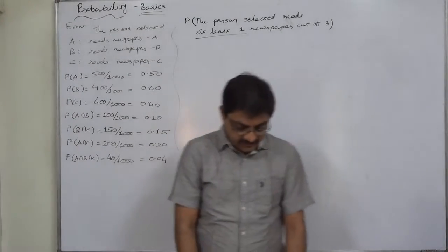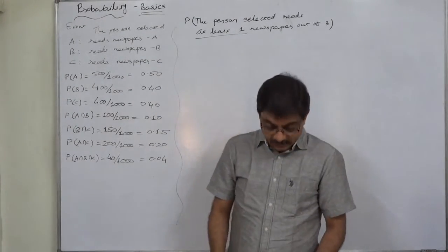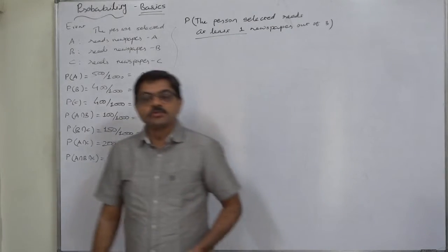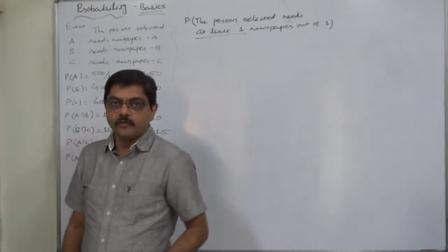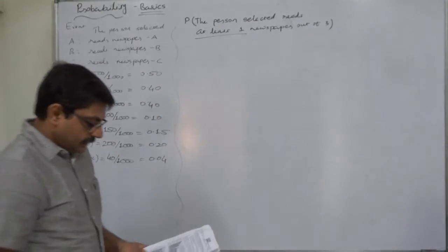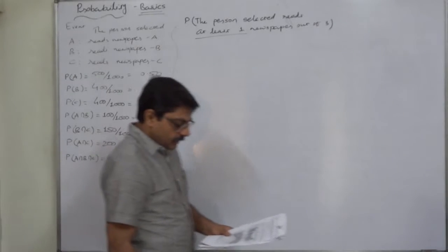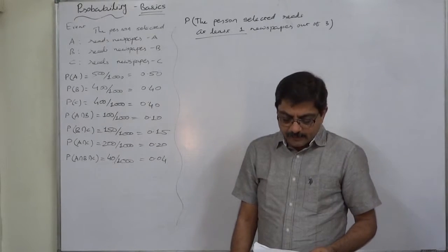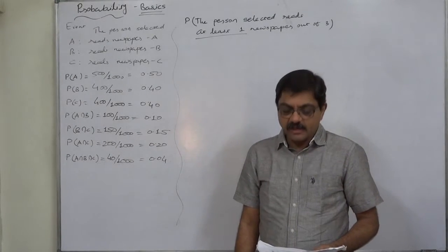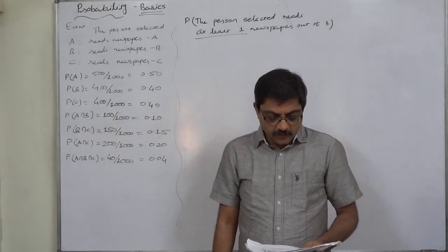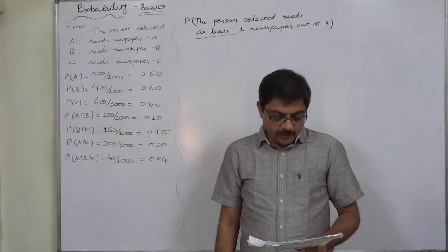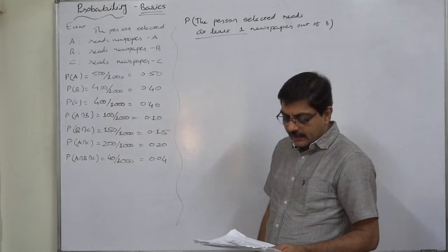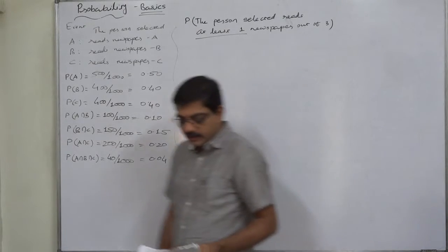Hello friends. The next case in basics of probability is the case of union of three events. There are 1000 people in a locality and three newspapers A, B and C are available to them. 500 people read A, 400 read B and 400 read C.